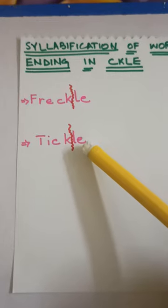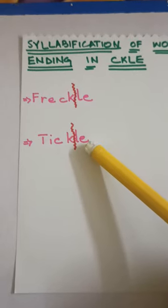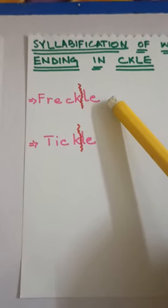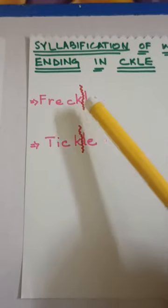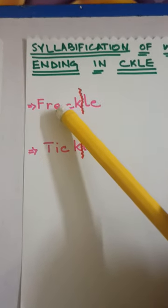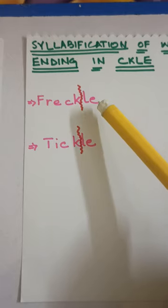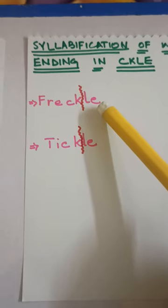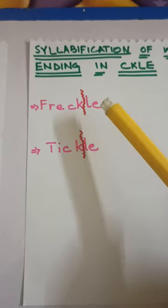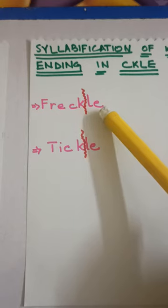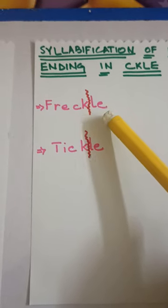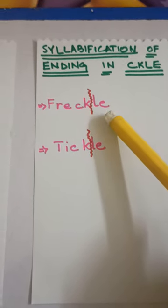As I already mentioned, every syllable has a vowel in it. If you see these two syllables, there is a vowel E. Here is also a vowel represented by E, but this E is silent. So every syllable has a vowel, either it is written or spoken.